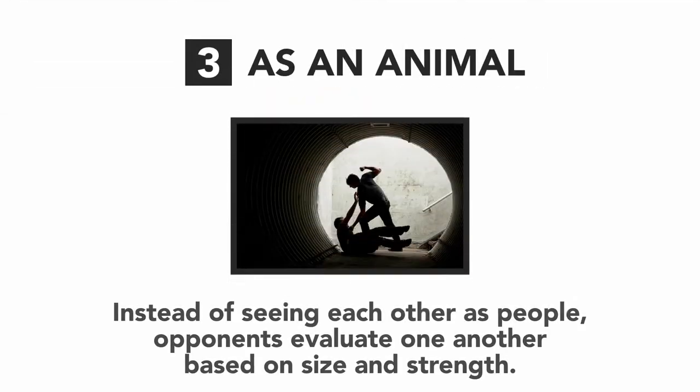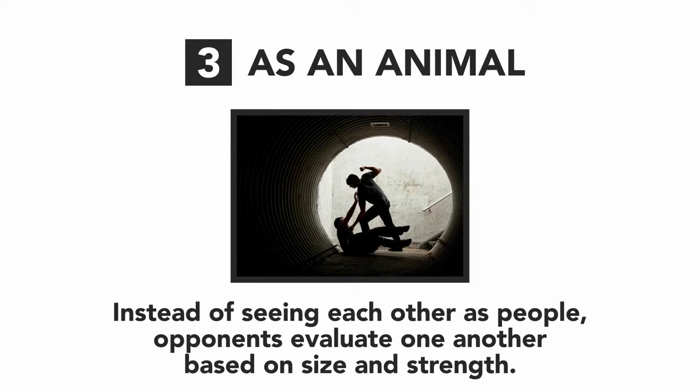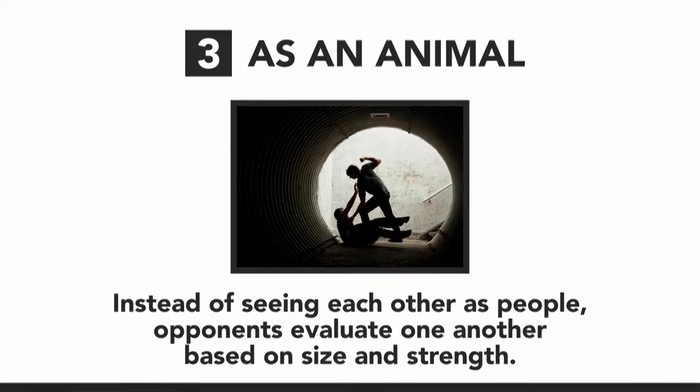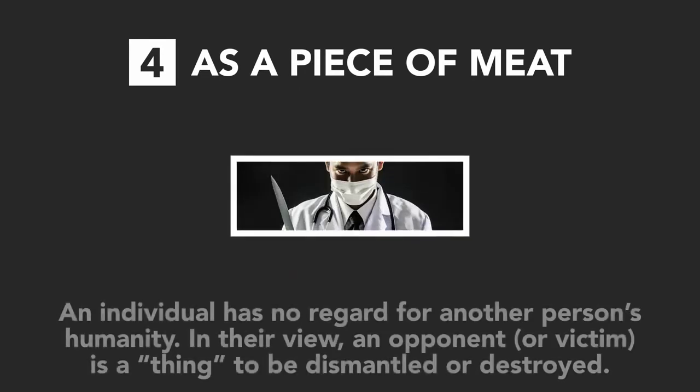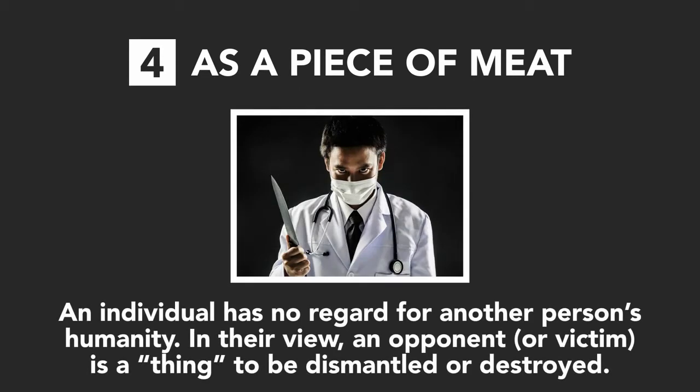The third is as an animal, where instead of seeing each other as people, opponents evaluate one another based on size and strength. The fourth is as a piece of meat, when an individual has no regard for another person's humanity. In their view, an opponent or victim is a thing to be dismantled or destroyed.